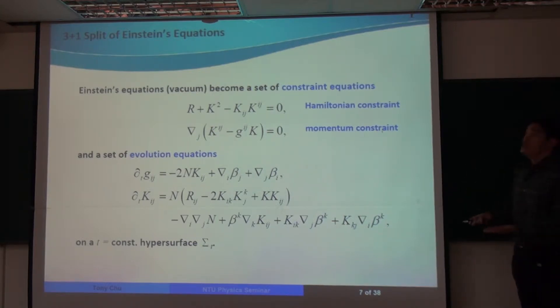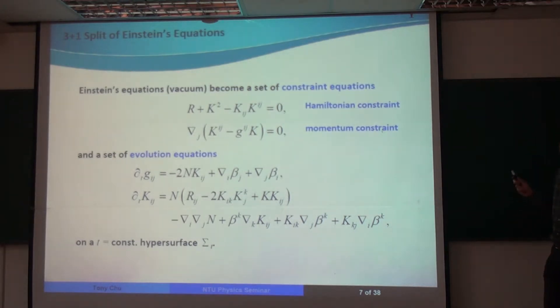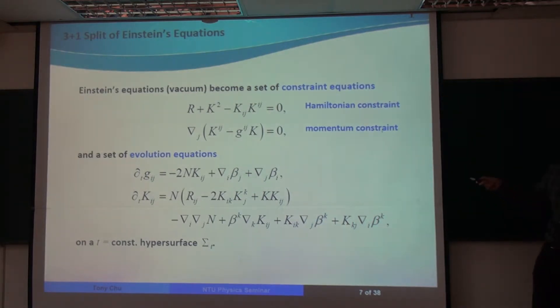If we define these 3 plus 1 quantities and substitute them back into Einstein's equations, Einstein's equations then split into a set of constraint equations. This is one equation, the Hamiltonian constraint. This is three equations, the momentum constraint. And we have a set of evolution equations for the spatial metric and extrinsic curvature. These constraint equations need to be satisfied on some initial constant-time hypersurface. And once we have a spatial metric and extrinsic curvature that satisfy these constraint equations on an initial hypersurface, we can then evolve them forwards in time using these evolution equations.